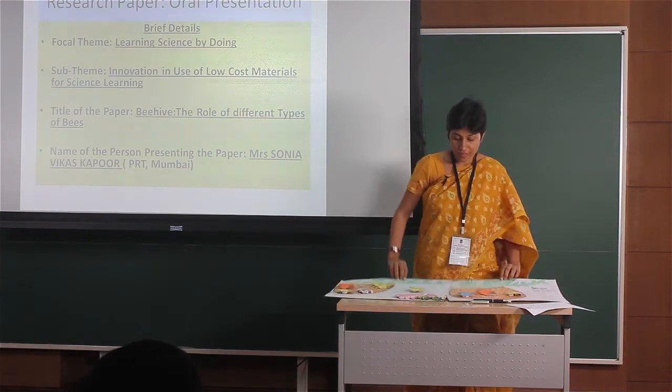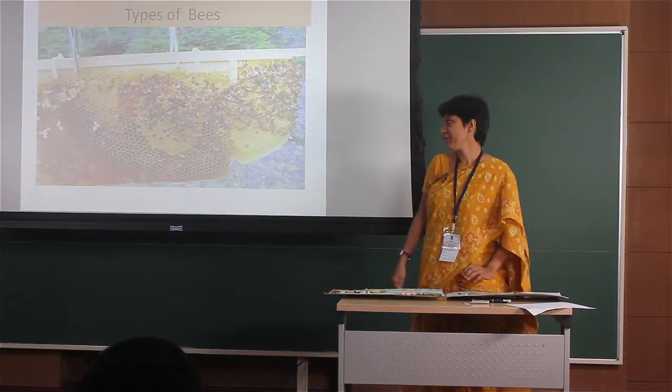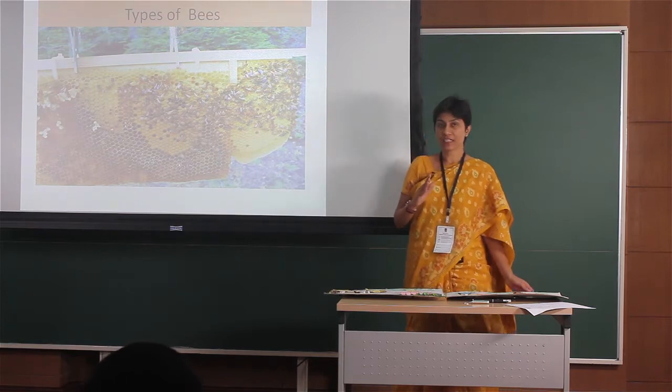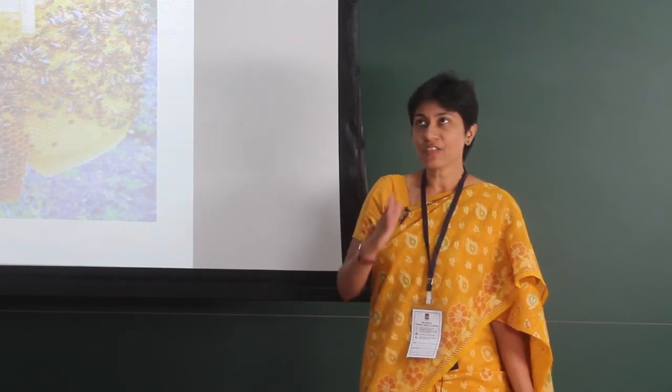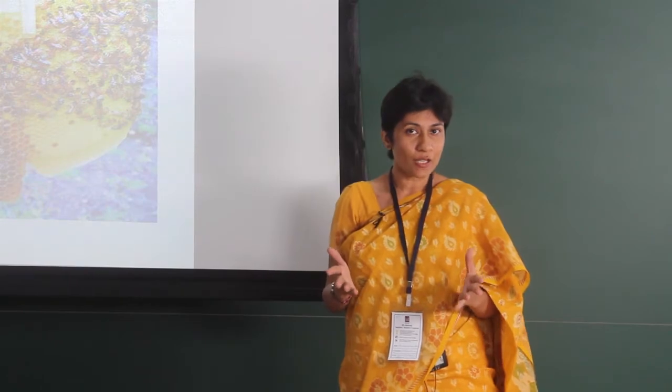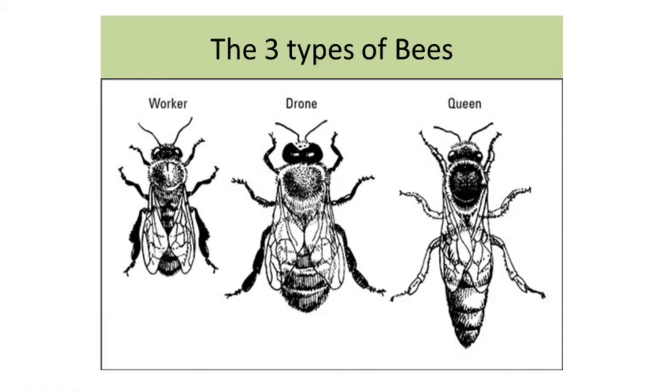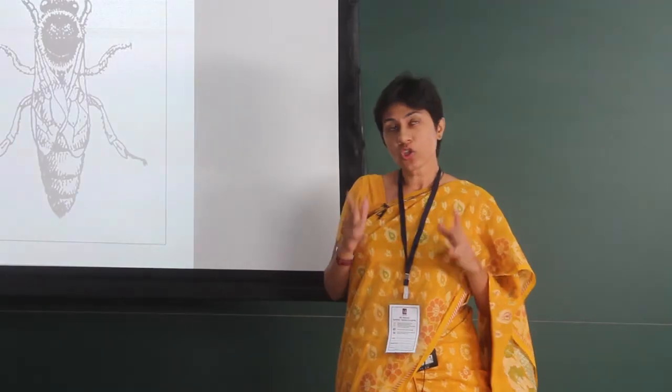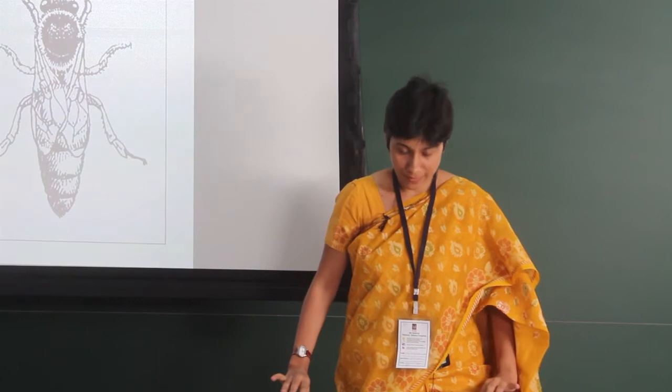When we introduce the topic of beehive for the first time to young learners of the primary section, say in the age group of 7 to 10, it is very difficult for them to visually discriminate that in a beehive there exist three different types of bees who greatly vary in their roles and sizes. To overcome this obstacle, this teaching aid was made.